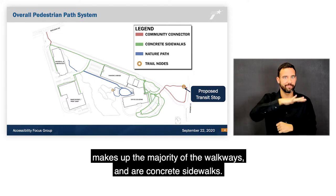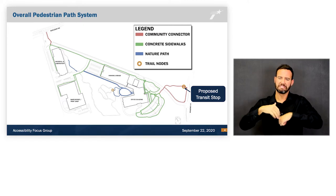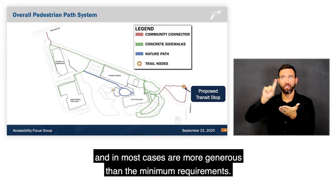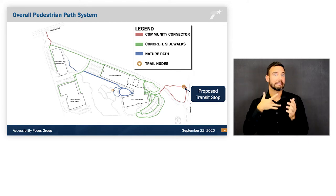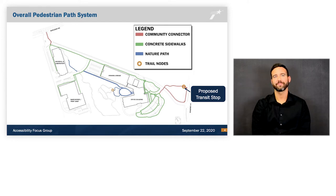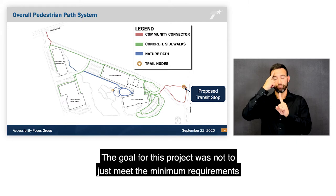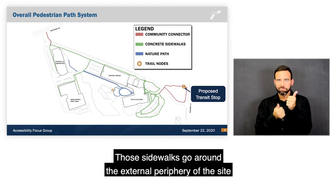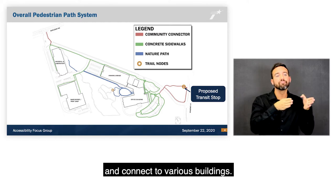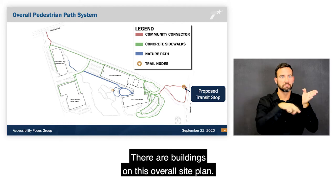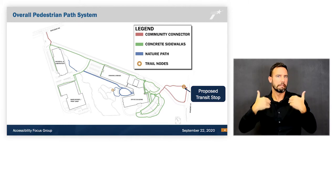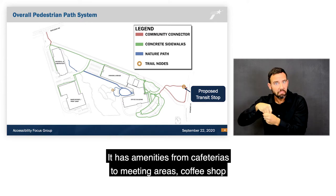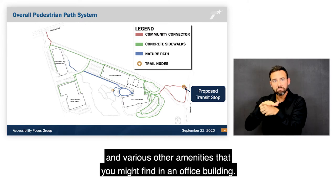The green color on the slide represents the majority of walkways — concrete sidewalks that meet all ADA regulations and in most cases exceed minimum requirements. The goal for this project was not just to meet minimums but to exceed them whenever possible. These sidewalks go around the external periphery of the site and connect to various buildings. To the east is the office building, approximately 400,000 square feet, with amenities including cafeterias, meeting areas, coffee shop, and various other features.